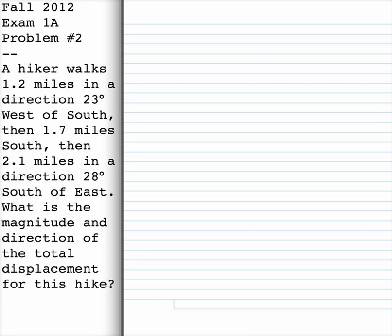We're doing Fall 2012, Exam 1A, problem number 2. It's a vector combination problem. For these kinds of problems, I find it's often helpful to sketch out the vectors and try to add them graphically first — not to get an exact answer, but so you have some idea what the answer ought to be.